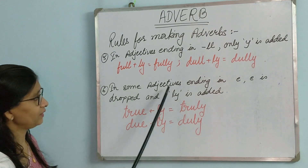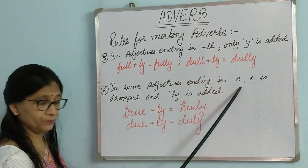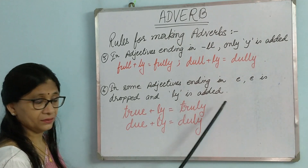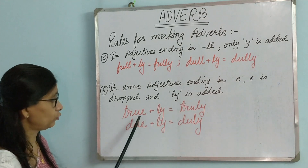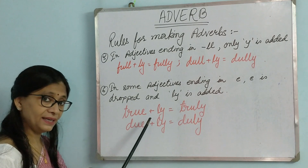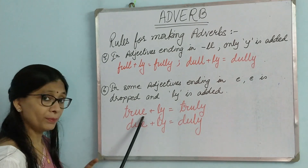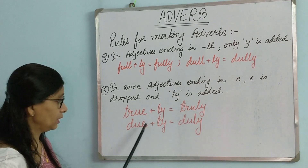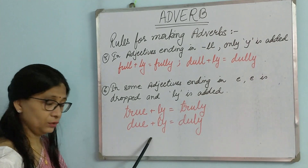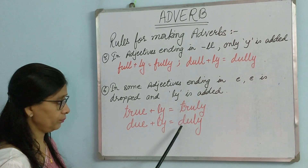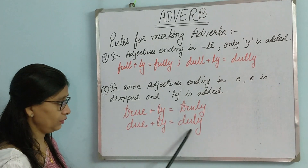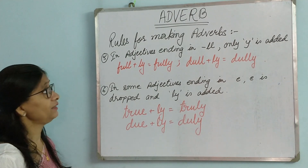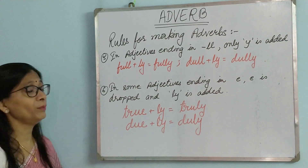For some adjectives ending in -e, the e is dropped and -ly is added. For example: true — the e is dropped and ly is added, making it truly. Due — D-U-E — we drop the e and add ly to get duly, D-U-L-Y. So these are some of the rules for making adverbs.